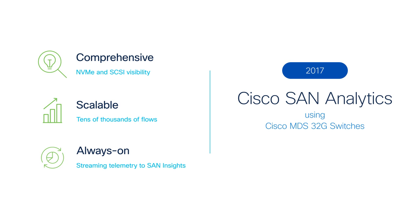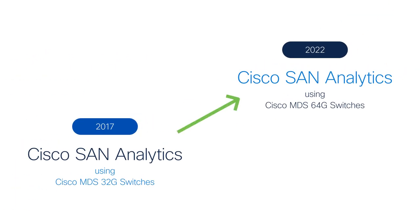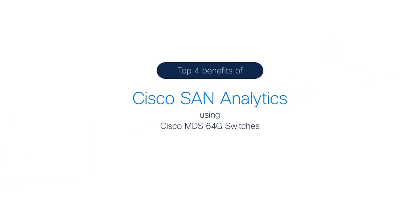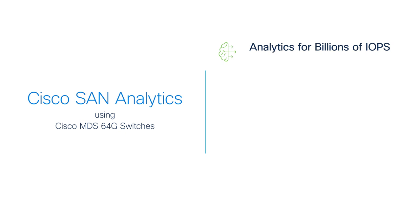This essentially gave always-on visibility into storage traffic. In 2022, Cisco took SAN analytics to the next level on MDS 64-gigabit Fiber Channel switches. In this video, I'll explain the top four benefits of this next level of SAN analytics on the MDS switches.